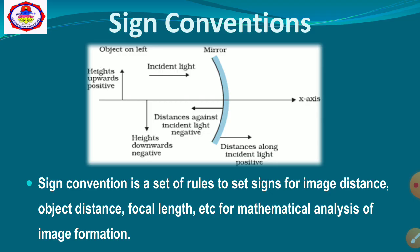Now the sign conventions. What are the sign conventions? Sign convention is a set of rules to assign signs for the image distance, object distance, focal length, and for the mathematical analysis of image formation. This is the image of a concave mirror shown on the screen having five arrows. The mirror has two sides: the left-hand side is the negative x-axis, the right-hand side is the positive x-axis, above the axis is the positive y-axis, and below the axis is the negative y-axis.